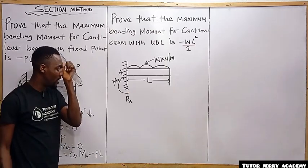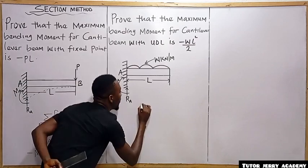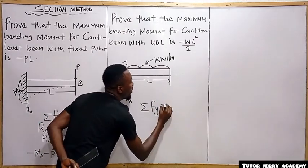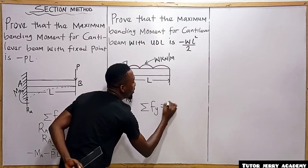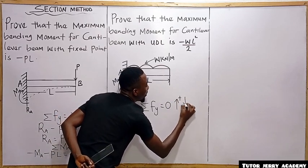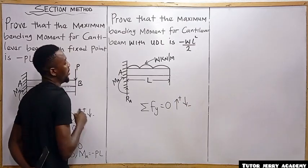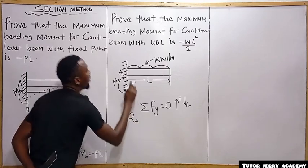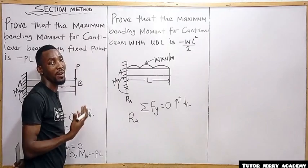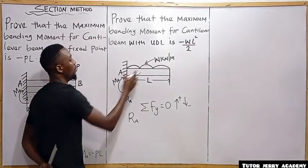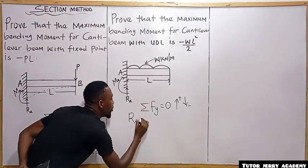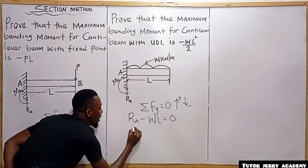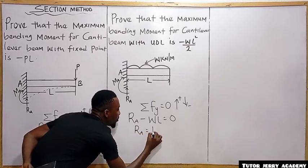Now for the second part — the UDL case — we again start with the sum of vertical forces equals zero, upward positive and downward negative. We have the reaction at A and the uniform distributed load, which we convert to a point load: W multiplied by L. So: R_A minus WL equals zero, giving us R_A equals WL.